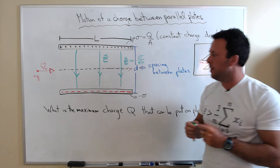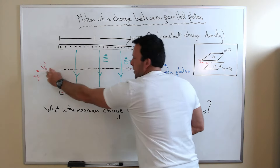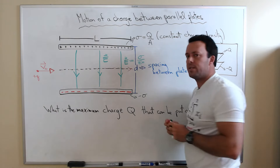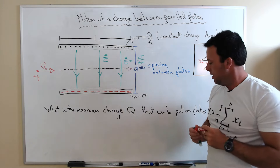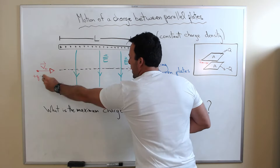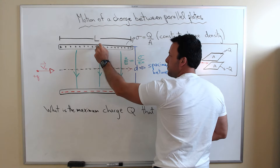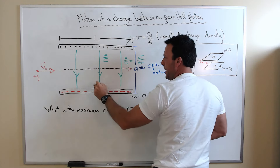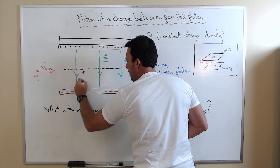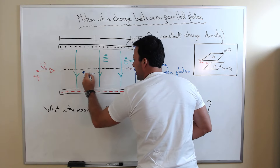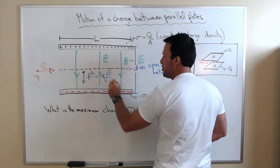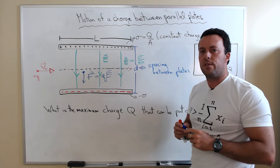When the field is very very strong, this charge is going to enter the field region, and as soon as it enters there's going to be a force acting on it. Since it's a positive charge in a field that points from the top plate to the bottom plate, there's an electric force F acting on it, and the value of that force is simply the magnitude of the charge times the electric field in that region.